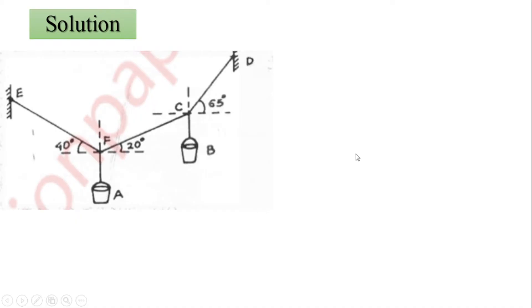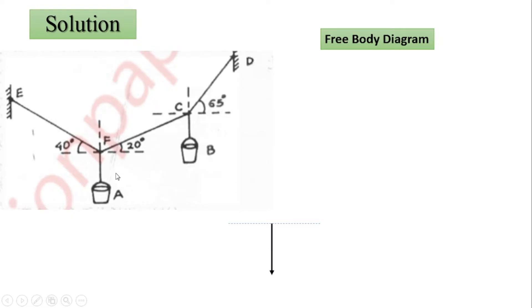Now we will see the actual figure given in the question paper. We consider joint F and joint C and start with the free body diagram. First we show the weight — weight always acts in the vertically downward direction. This is the weight attached with bucket A.